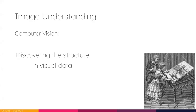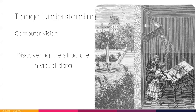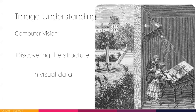In computer vision, we are interested in this general image understanding problem. We're looking at images, like in this painting over there, and we're trying to figure out what is the structure in the visual data. But in fact, this image has been generated as a picture of the real world out there. So we should actually be looking at how to discover the structure of the world from the visual data that we have.